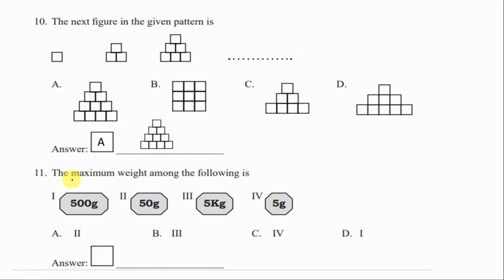Question number eleven: the maximum weight among the following — 500 gram, 50 gram, 5 kilogram, and 5 gram. Converting 5 kilogram: kilo means thousand, so 5 kilogram equals 5000 gram. Comparing: 500 gram, 50 gram, 5000 gram, and 5 gram. Five thousand is the heaviest, so the right option is B, roman three, that is 5 kg.